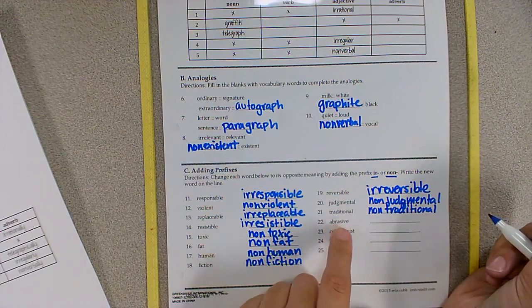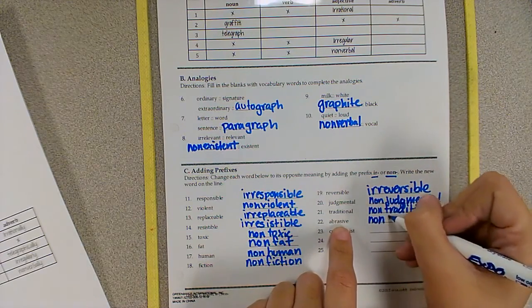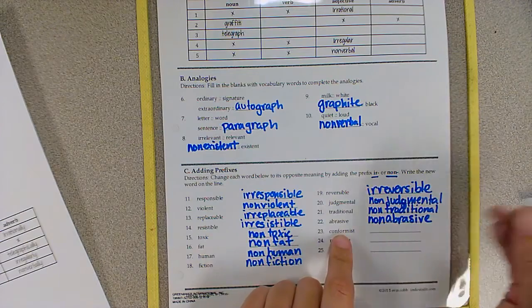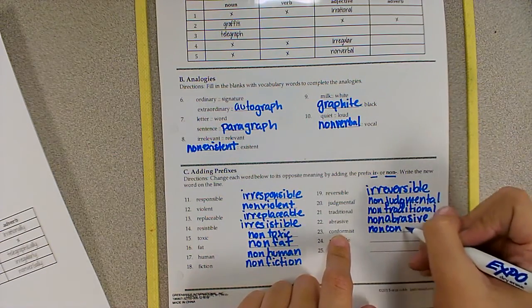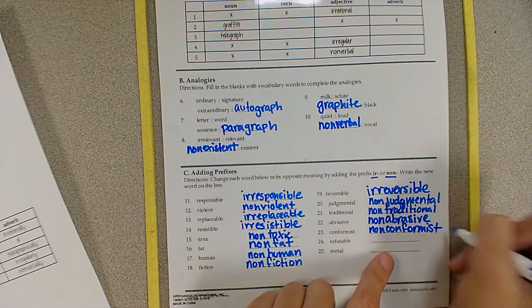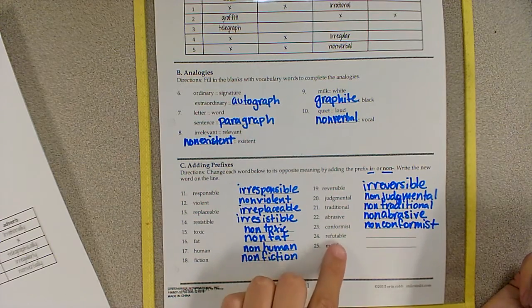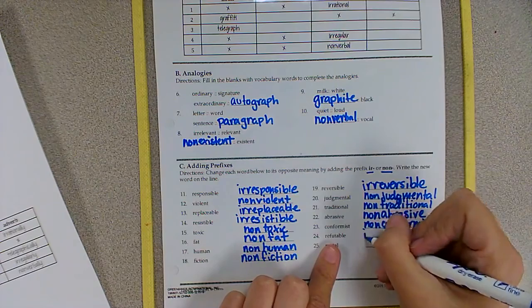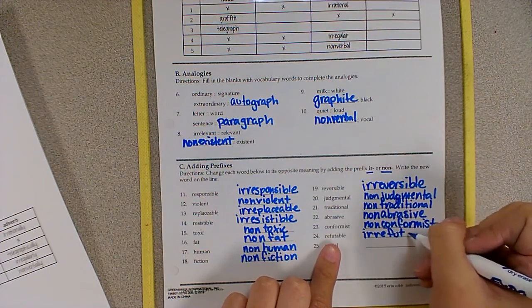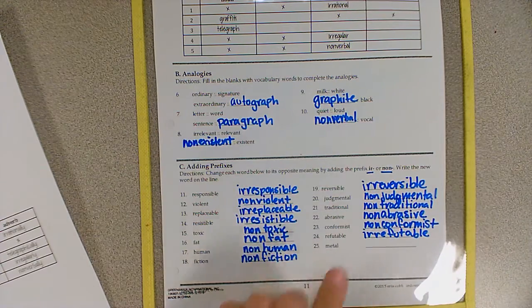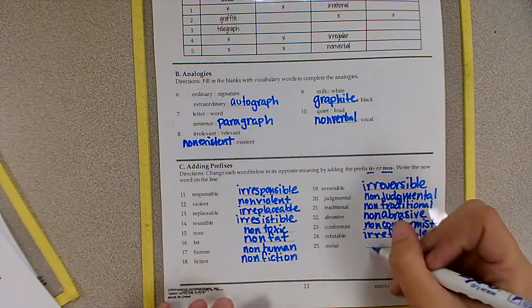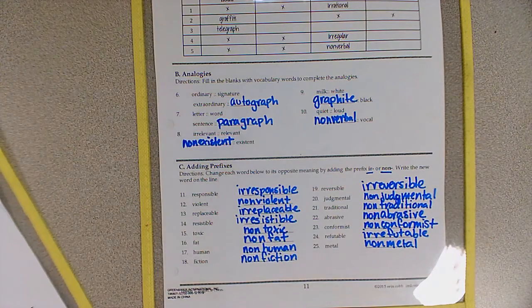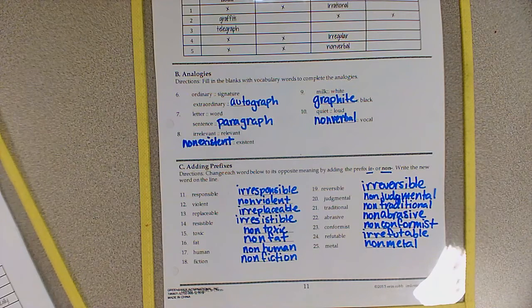Something that isn't traditional we would say is non-traditional. Something that isn't abrasive, like a sponge, is non-abrasive, meaning it doesn't scratch. Someone who is not a conformist we would call them a non-conformist. Information that is not refutable we would call irrefutable. Let me rewrite that, I wrote that a little bit unclear. Irrefutable. If you need more time to write these down, this would be a great place to pause the video.